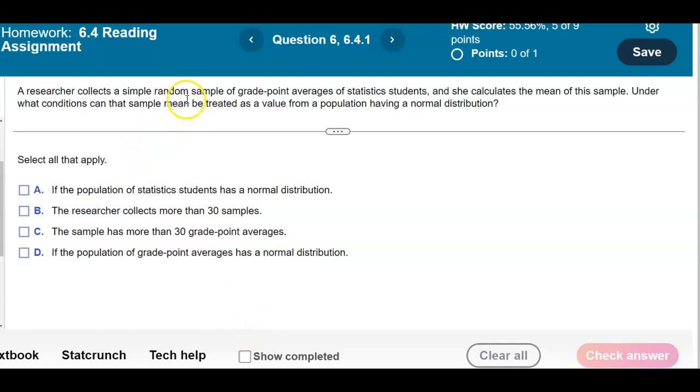A researcher collects a simple random sample of grade point averages of statistics students and she calculates the mean of this sample. Under what conditions can that sample mean be treated as a value from a population having a normal distribution?